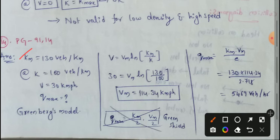At a density of 100 vehicles per km, the speed is 30 km per hour. We need to determine the maximum flow using Greenberg's Model.